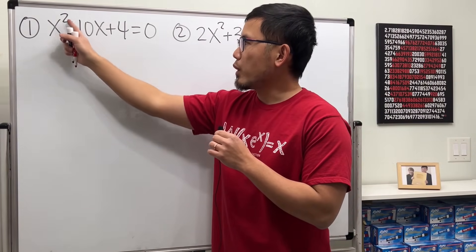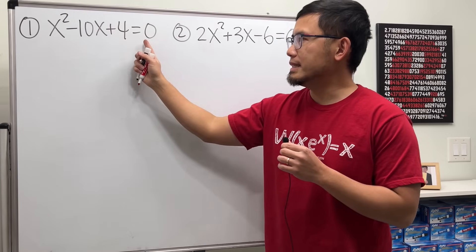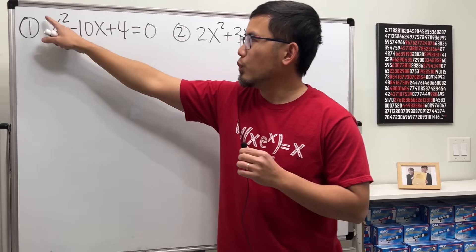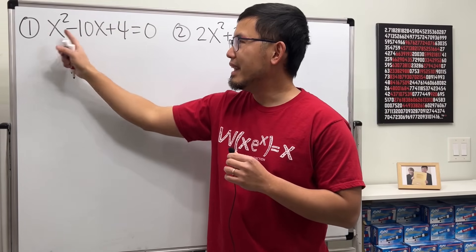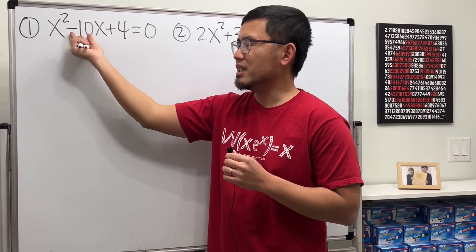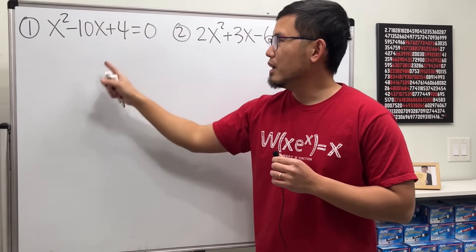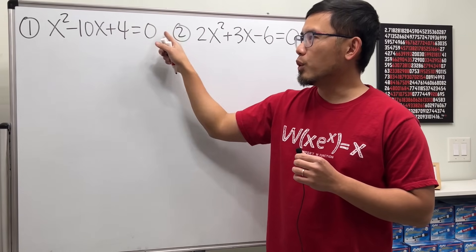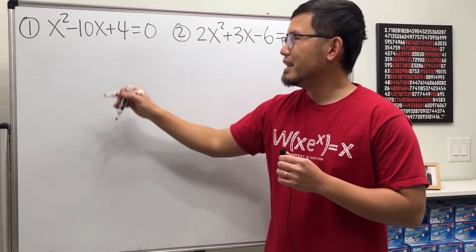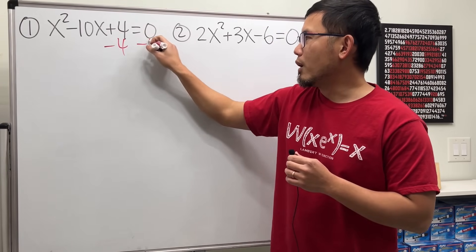The first one is x squared minus 10x plus 4 is equal to 0. Remember, step 1, we want to have 1x squared, which we do, right? And then plus a number times x. This time, the b value here is negative 10, so this is good. We don't want the 4. Let's put the 4 to the other side, because 4 did not help us to factor this. So step 1, subtract 4 on both sides.